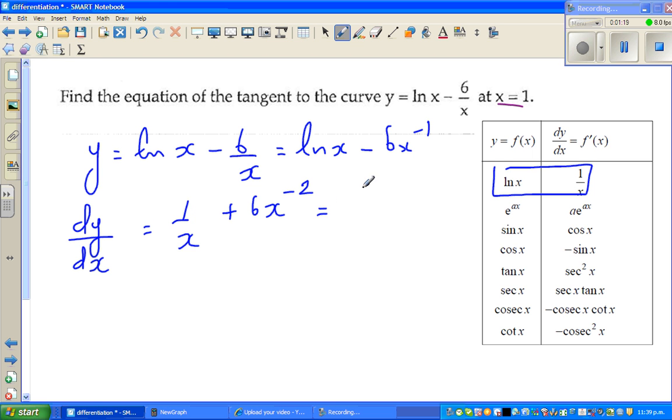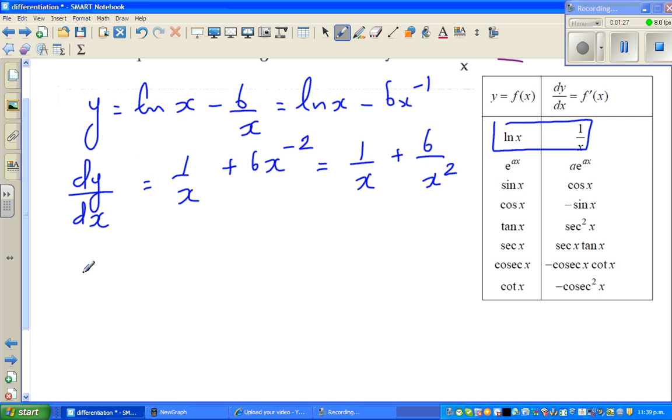So if you simplify this, this is nothing but 1 over x plus 6 over x squared. So let's find the gradient at x equals 1, so dy by dx when x equals 1. So this is 1 over 1 plus 6 over 1 squared, which is nothing but 1 plus 6, which is 7.